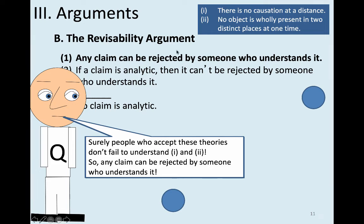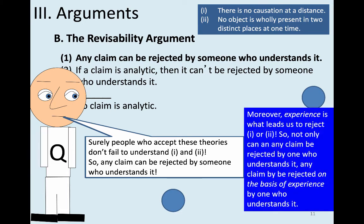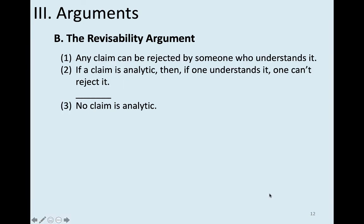Quine thinks that he's demonstrated that any claim can be rejected by someone who understands it. And Quine points out it's experience that leads us to reject claims one and two. So not only can any claim be rejected by someone who understands it, any claim can be rejected on the basis of experience by someone who understands it. That's the first premise of the revisability argument.